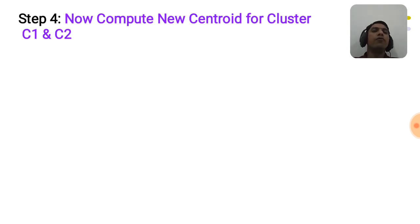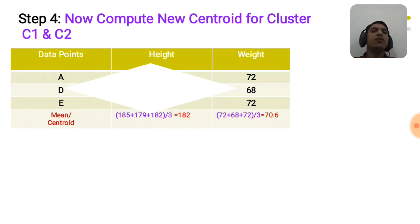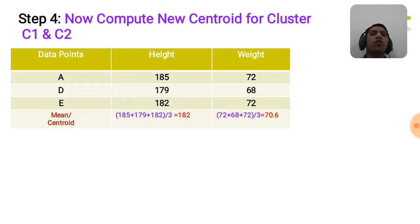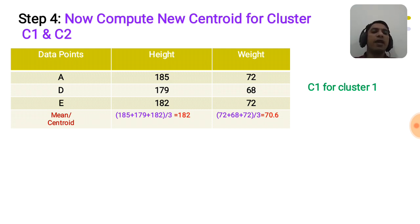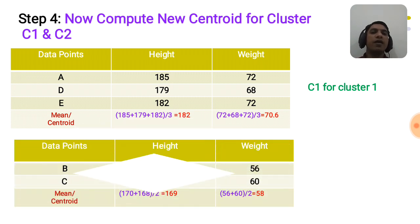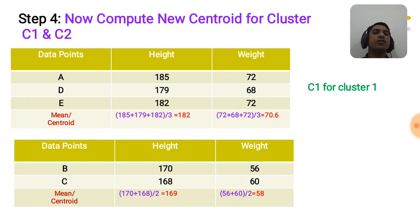Now we will compute new centroids c1 and c2. Cluster c1 contains data points A, D, E, so the new centroid c1 is (182, 70.6), which is the mean of the height and weight parameters. For cluster c2, containing data points B and C, the new centroid c2 is (169, 58).